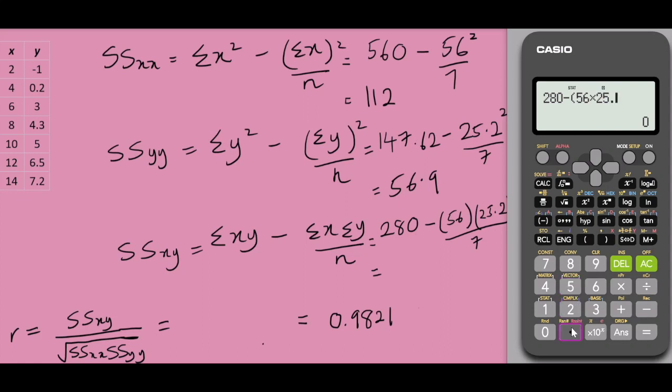To find the value of our linear correlation coefficient, we would take the sum of squares of xy which is 78.4 divided with the square root of 112 multiplied with 56.9.